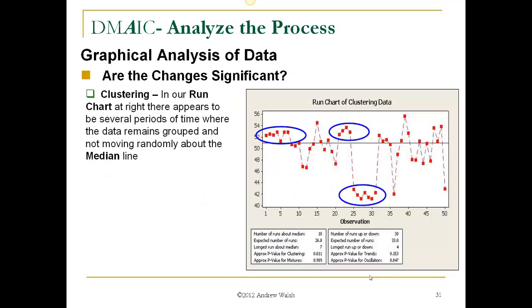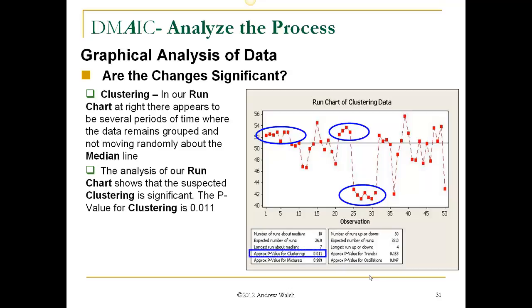Clustering. In our run chart at right, there appears to be several periods of time where the data remain grouped and is not moving randomly about the median line. The analysis of a run chart shows the suspected clustering. It is significant. The p-value for clustering is .011, less than .05.